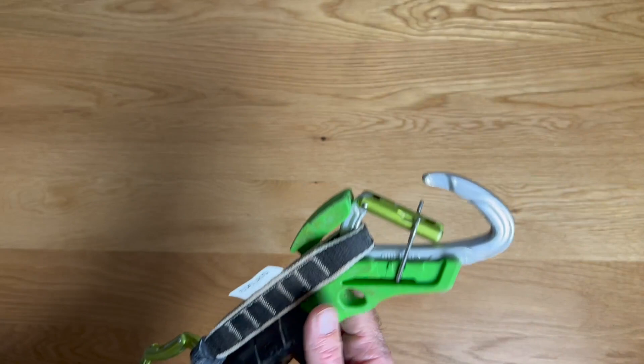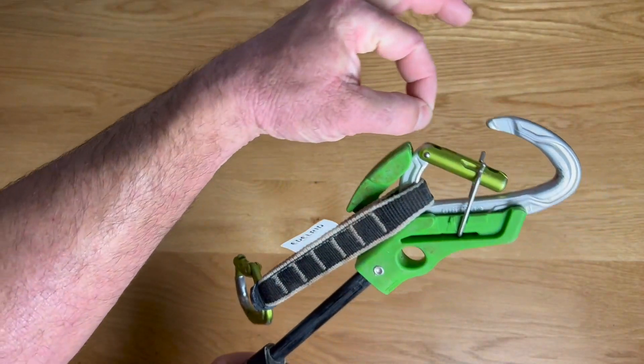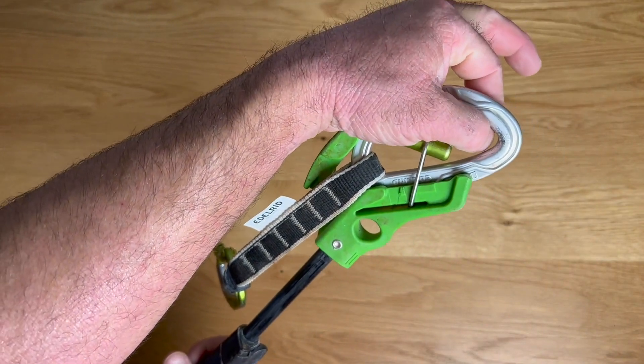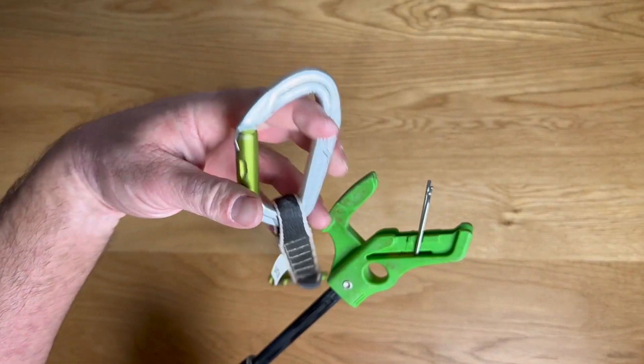Now, all you got to do is open this up, extend it as far as you need it to go. And then once you get to the bolt, say this is the bolt, just feed it through and pull it back. It'll snap it shut. And now you've got your first quickdraw up on the wall. No problem.